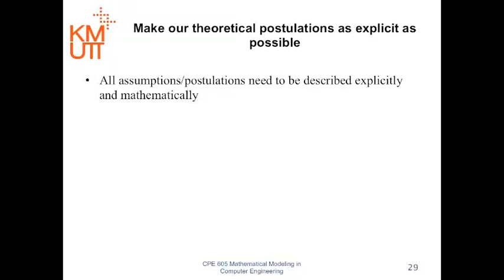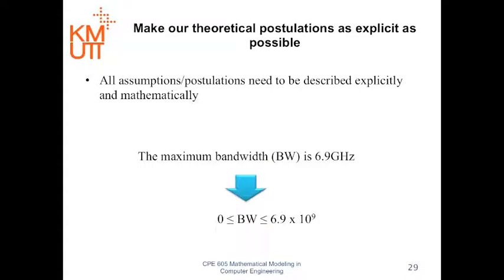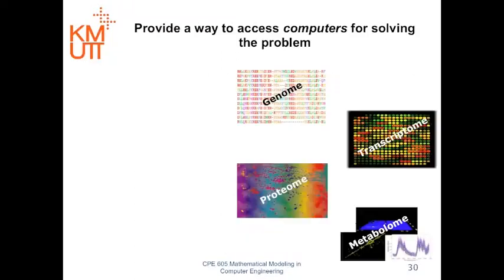Model also forces us to translate all hypotheses and assumptions into the mathematical statements. This makes everything more transparent. For example, if we say that the maximum bandwidth is 6.9 GHz, it doesn't say like in the mathematical statements that the bandwidth is from 0 to 6.9 GHz. The first statement implicitly includes 0, but the second one explicitly states that there has to be some boundaries there. So when you use computer to write a program about that, it will be very clear that you need to include 0.